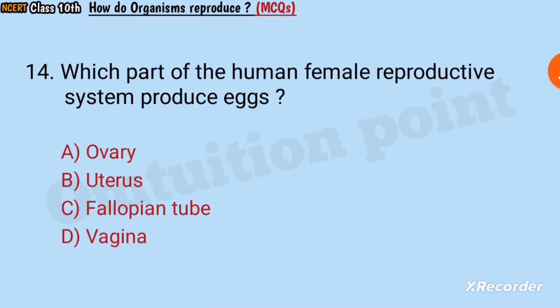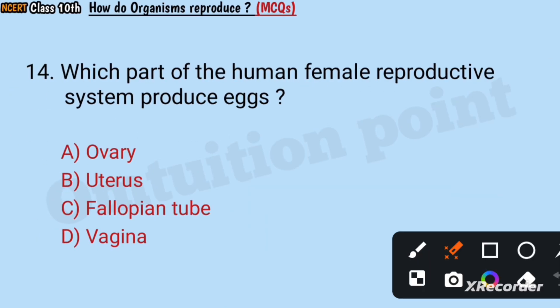Question number 14: Which part of the human female reproductive system produces eggs? Ovaries, uterus, fallopian tube, or vagina? Answer: Ovary. Ovary produces eggs.